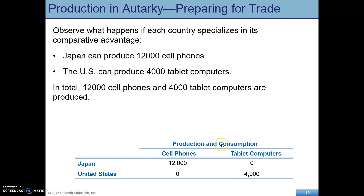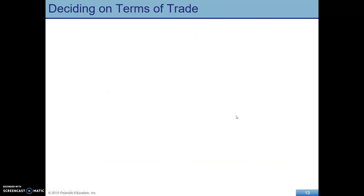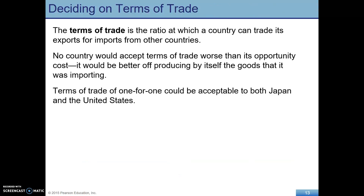After specializing, Japan produces 12,000 cell phones and the U.S. produces 4,000 tablets, with no other production on either side — the U.S. isn't making any cell phones and Japan is not making any tablets. The U.S. and Japan would now like to trade. What would be an acceptable terms of trade? Here we're just thinking about exchanging goods directly for other goods, not considering yen and dollar prices.